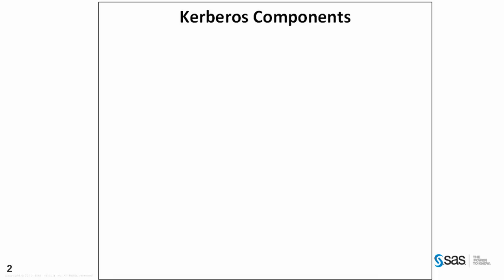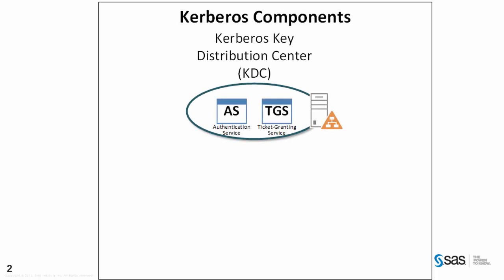Let's start by listing the components we will be considering for this overview of Kerberos authentication. First we have the Kerberos Key Distribution Centre, or KDC. On the KDC we have two separate services running: the first is the authentication service and the second is the ticket granting service. We will not specifically call out one operating system or one Kerberos implementation over another — throughout we will try to be as generic as possible.